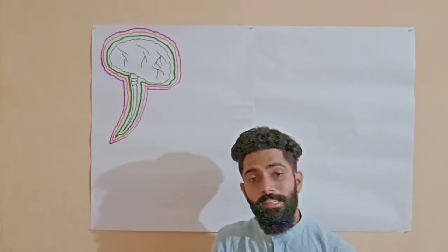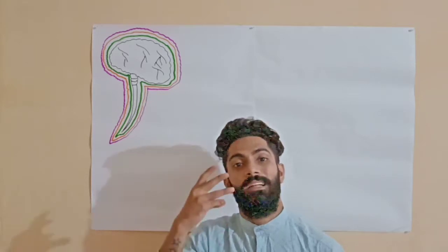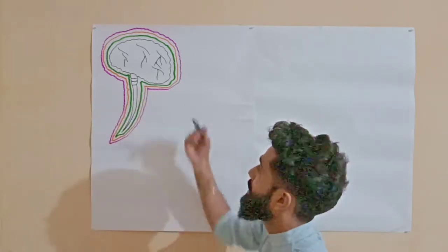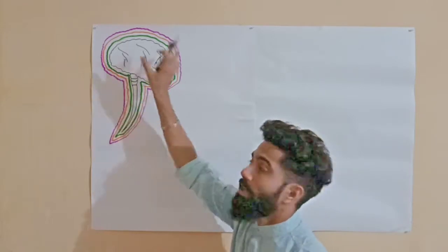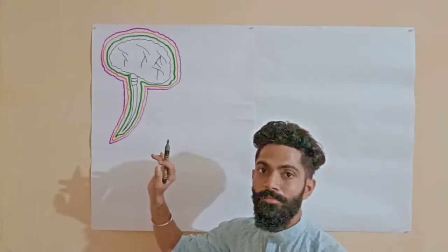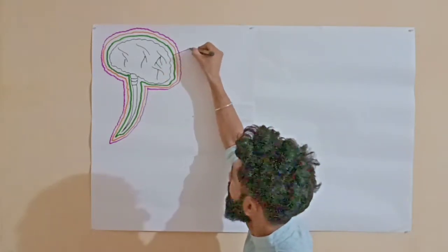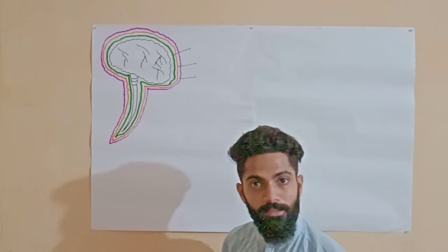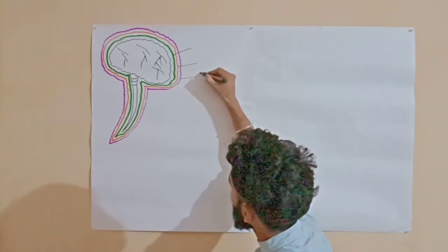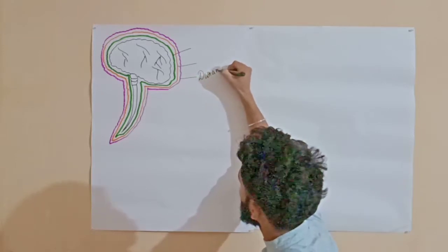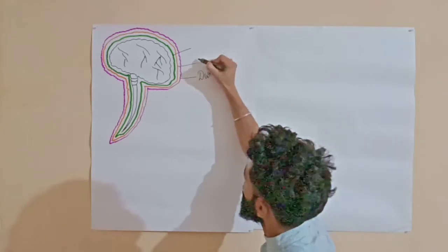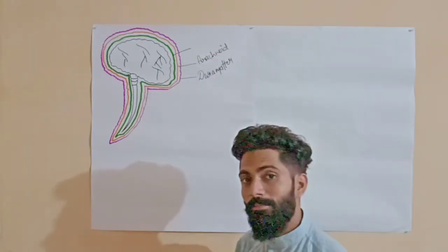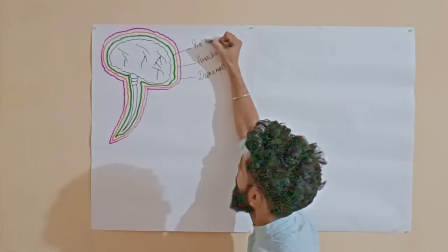Meningitis is nothing but the inflammation of the three layers or three membranes on the brain and the spinal cord. The brain and spinal cord is protected by three layers of tissues. The innermost layer is the green one, the middle one is the orange one, and the outermost layer is the pink one — the dura mater. The middle one is the arachnoid mater and the innermost layer is the pia mater.